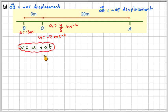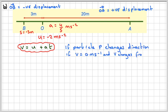So, if we use V equals U plus AT, and if the particle P changes direction, if V is 0, and then V goes from either negative to positive, in this case, that's what we want it to happen, so we'll say that 0 equals minus 2 plus 4 fifths T. Solving that, we're going to get that 2 equals 4 fifths T, and that T will be equal to 2.5, which is 5 times 10 divided by 4, which is 10 over 4, or 2.5.